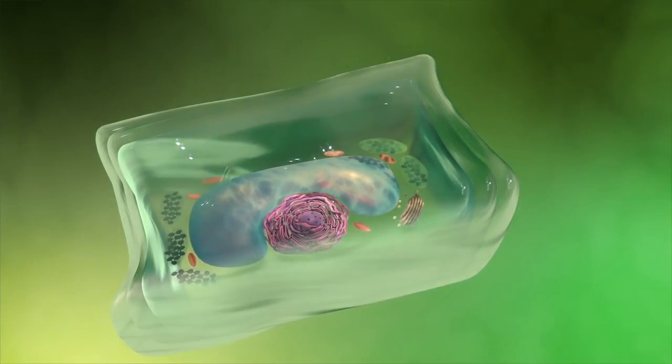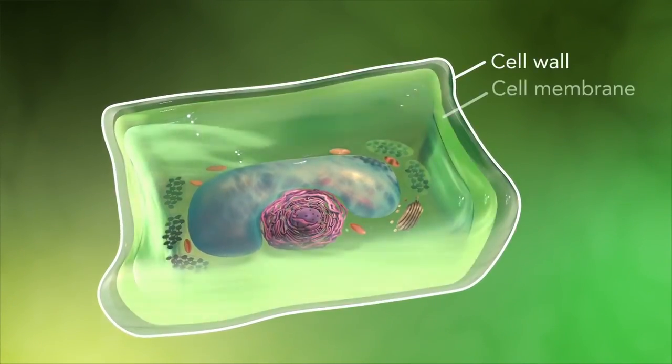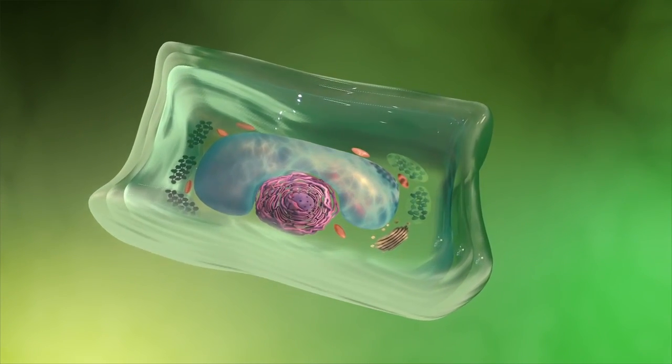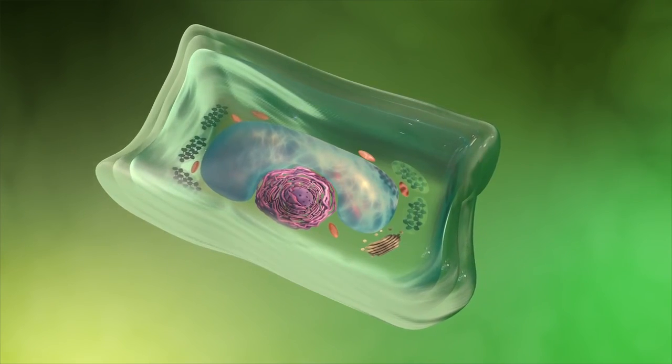Plant cells also have a cell wall outside of their cell membranes that shape, support, and protect the plant cell. Animal cells never have a cell wall.